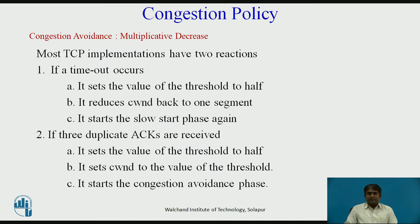Most TCP implementations have two reactions. First, if a timeout occurs, there is a stronger possibility of congestion — a segment has probably been dropped in the network and there is no news about the following sent segments. In this case, TCP reacts strongly: it sets the value of the threshold to half of the current window size, reduces the congestion window back to one segment, and starts the slow start phase again.